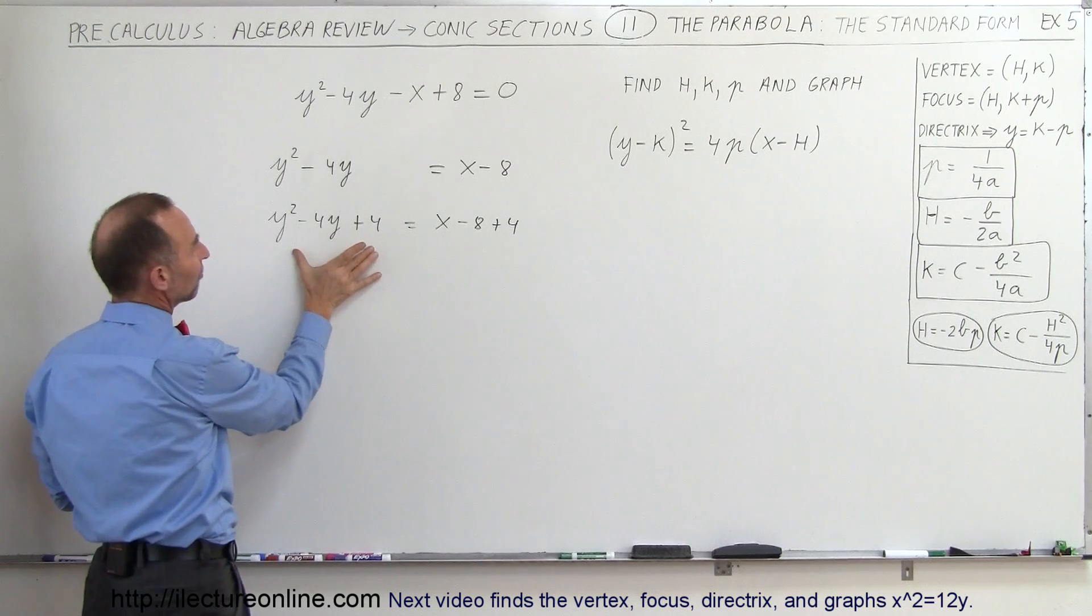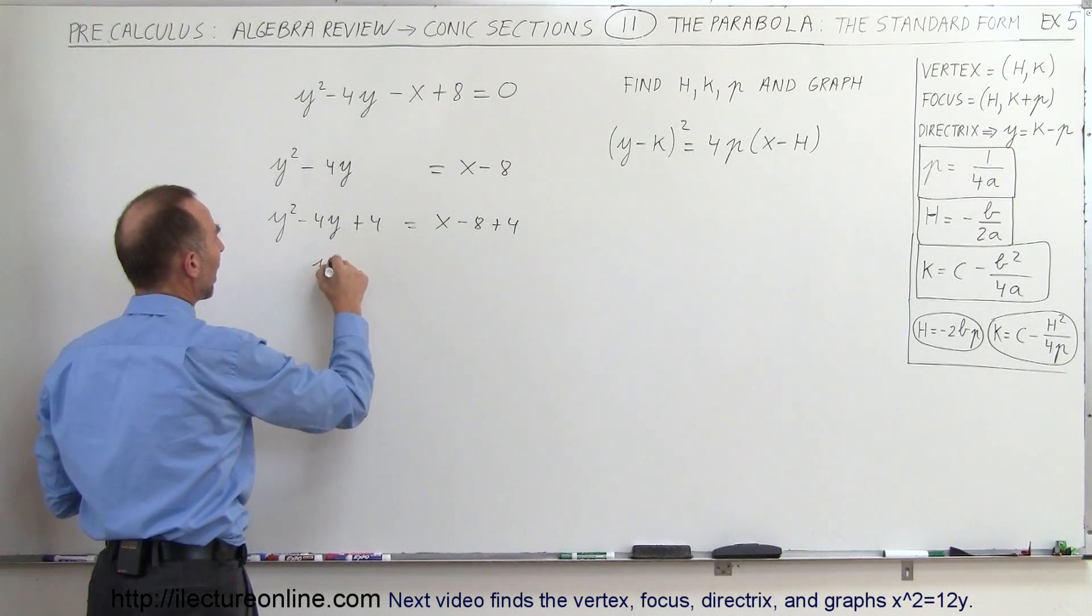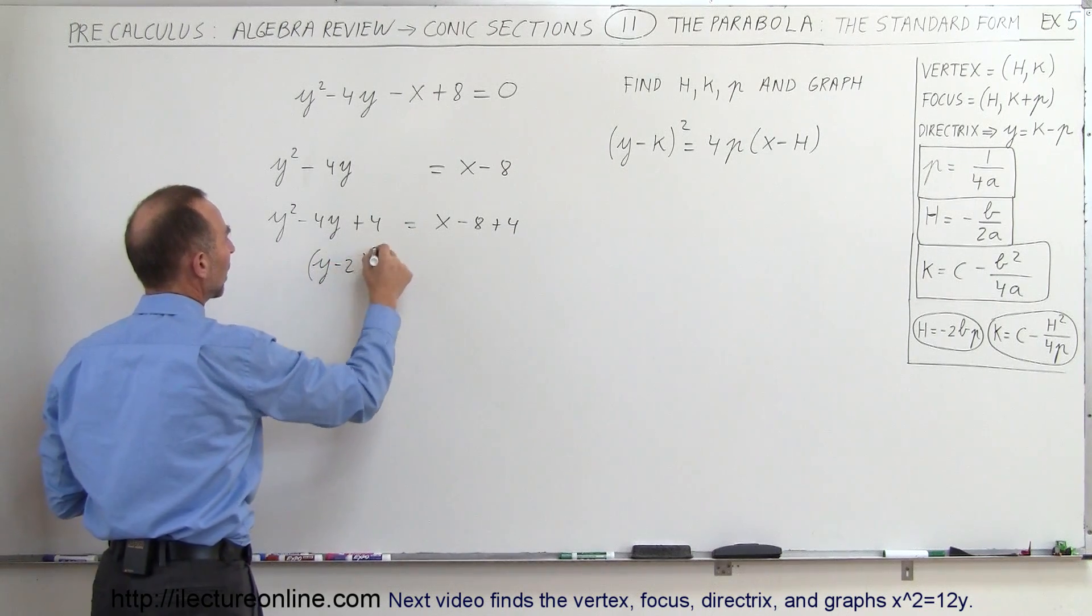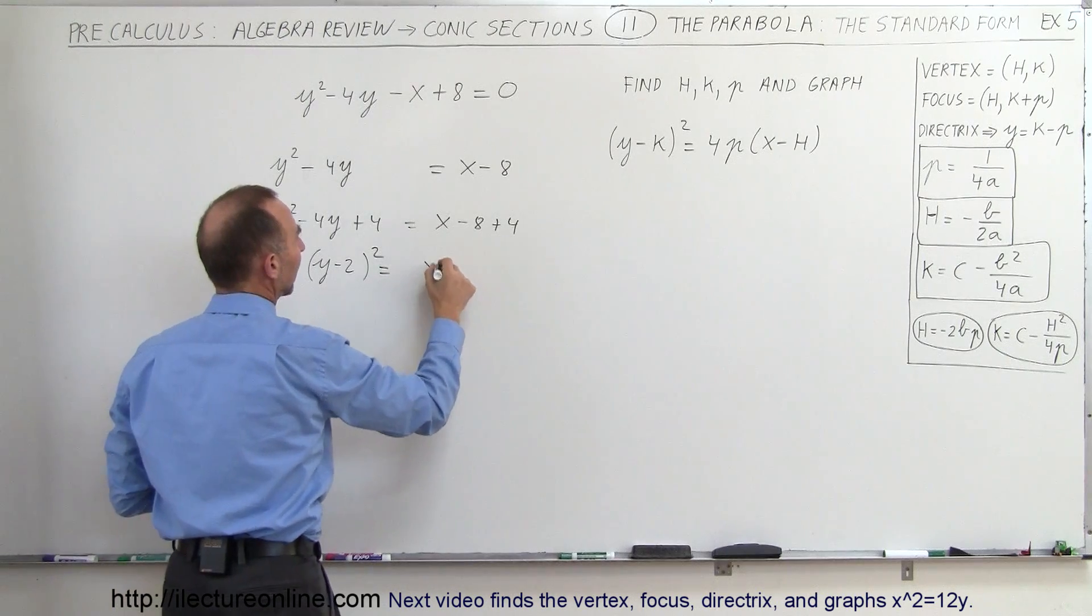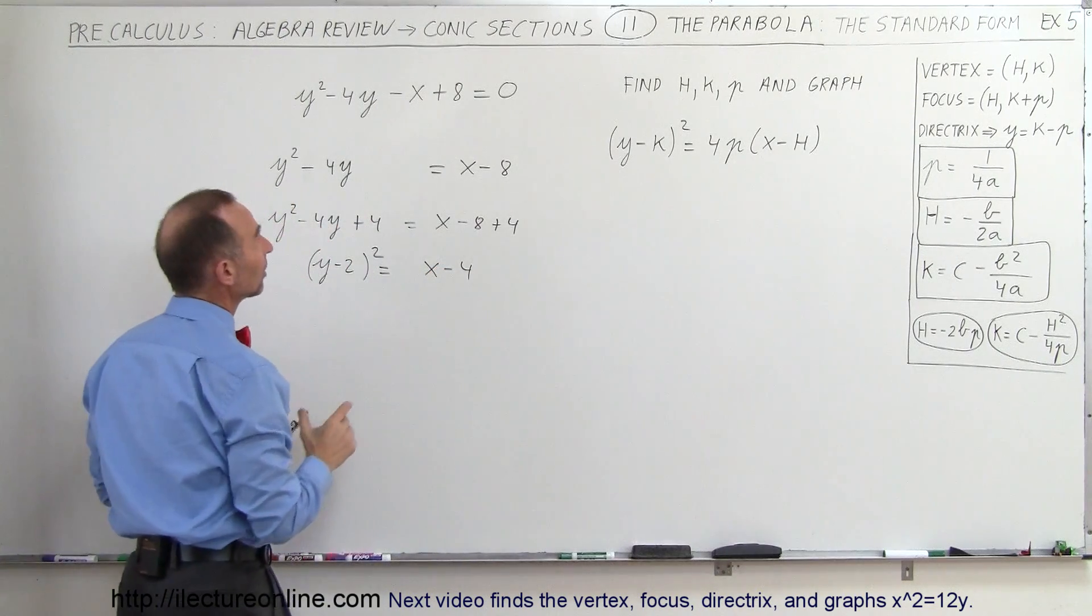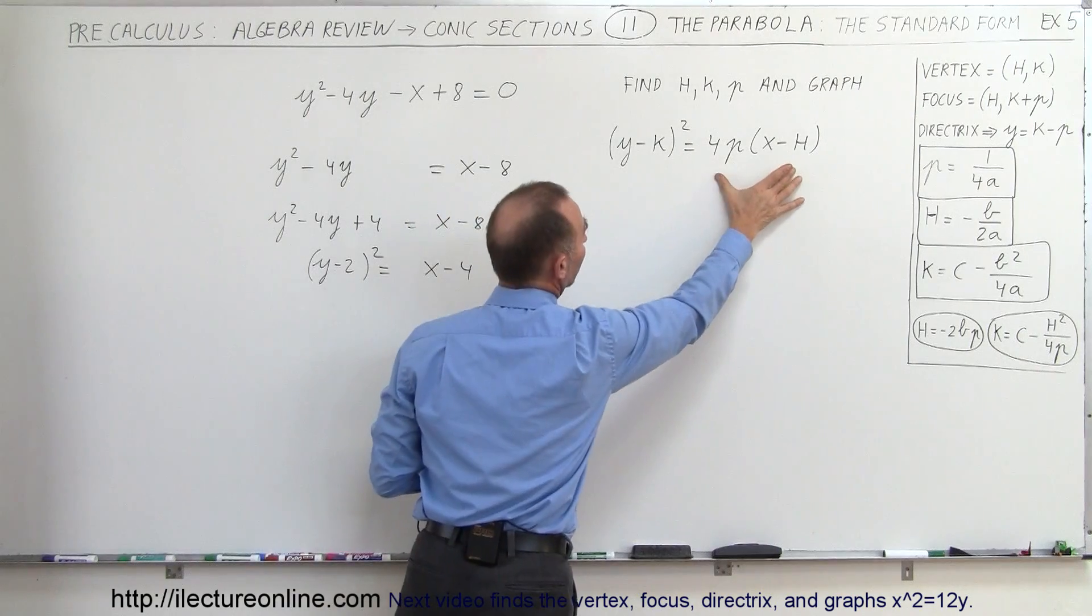Simplifying that, we can factor this. This will be equal to (y - 2)² equals x - 4. Then realizing that we want to write it in this form right here.